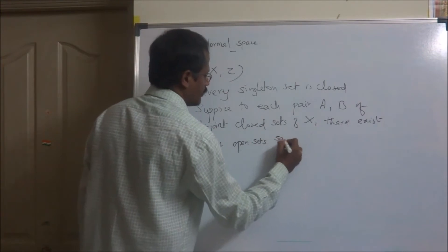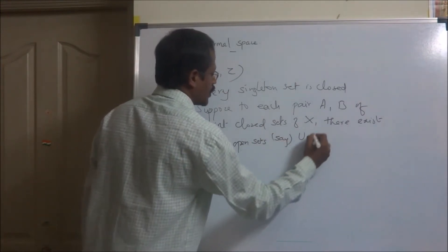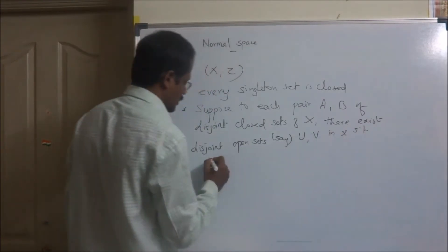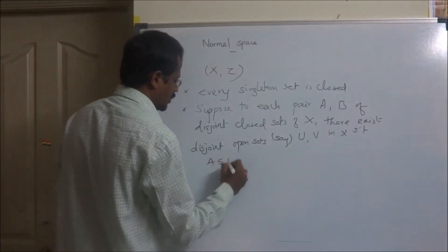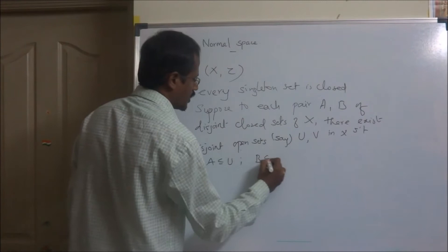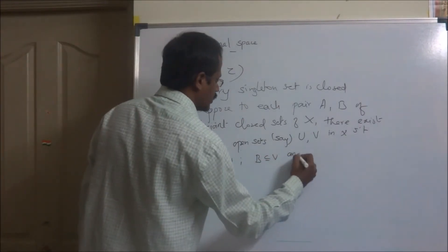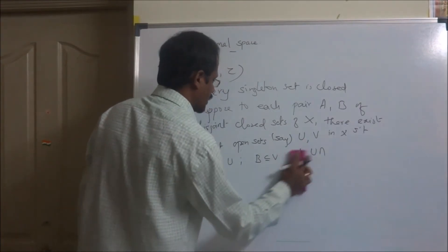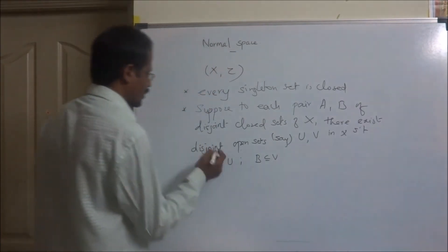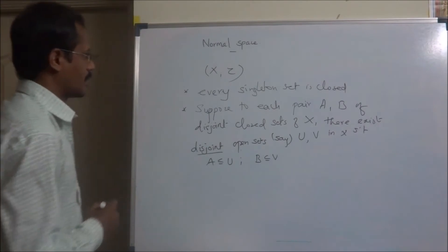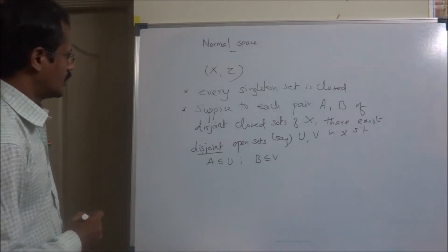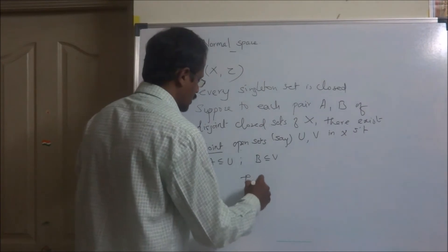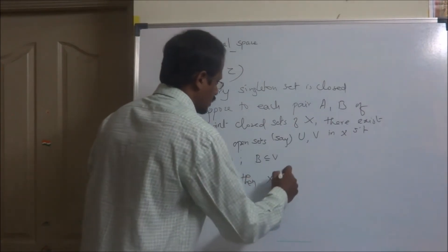Let us say U and V in X such that A is contained in U and B is contained in V, and U and V are disjoint. Then we say that the space is normal — X is normal.